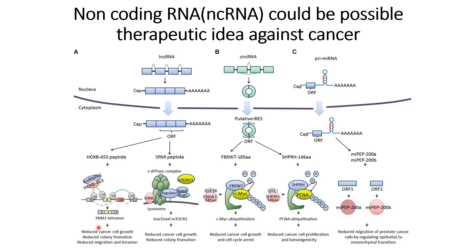As a result, PKM1 tetramer is overexpressed compared to the normal case, and that leads to the following effects on cancer cells: it will reduce cancer cell growth, reduce colony formation, and at the same time reduce migration and invasion.